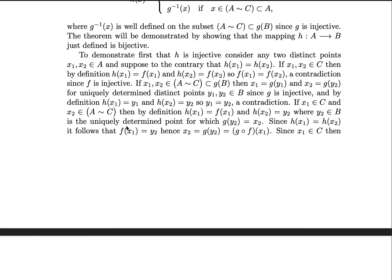To demonstrate that it's injective, consider any two points x₁ and x₂ in A. And suppose, we'll do this by contradiction, suppose the contrary that h(x₁) is equal to h(x₂). If x₁ and x₂ are in C, then by definition h(x₁) is equal to f(x₁) and h(x₂) is equal to f(x₂), so they're equal. But this is a contradiction since we already assumed that f was injective.